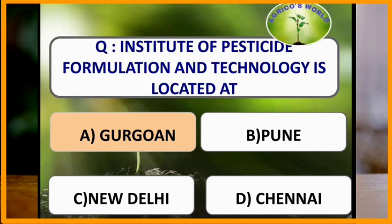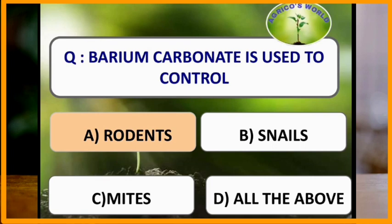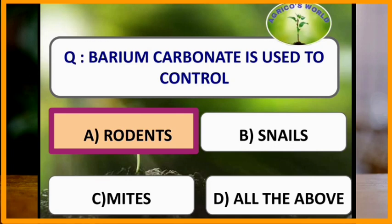The Institute of Pesticide Formulation and Technology is located at Gurgaon. Barium carbonate is used to control rodents.